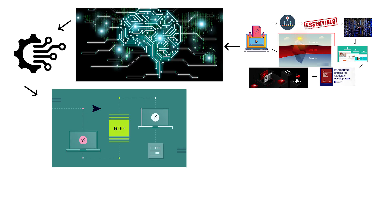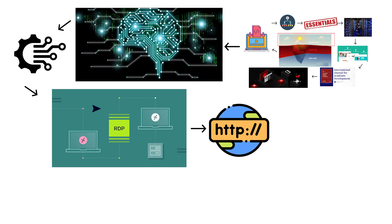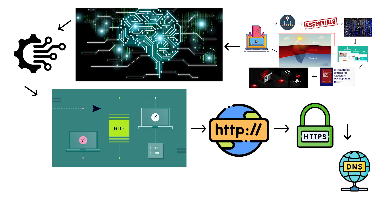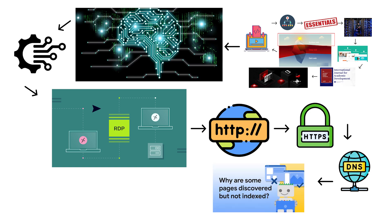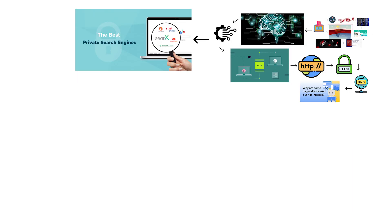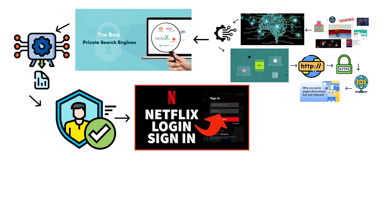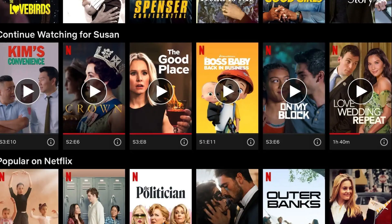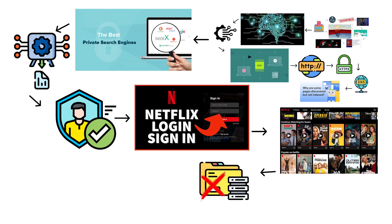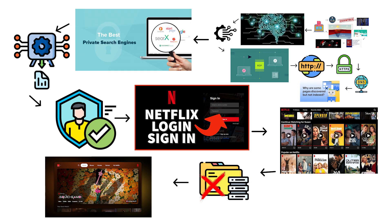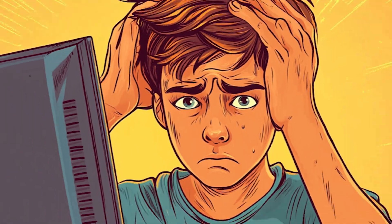Technically, the deep web uses the same protocols — HTTP, HTTPS, DNS — but its pages aren't indexed. Search engines can't see them because they're generated dynamically for authenticated users. When you log into Netflix, your continue-watching page isn't a public file on a server — it's built in that instant, for your eyes only.